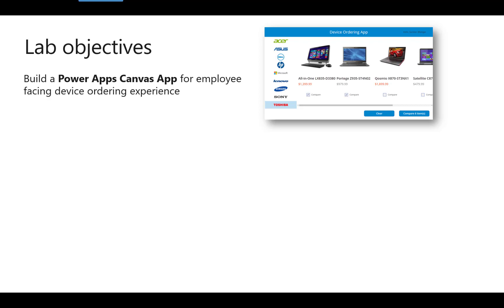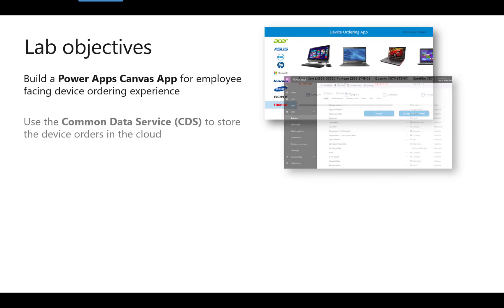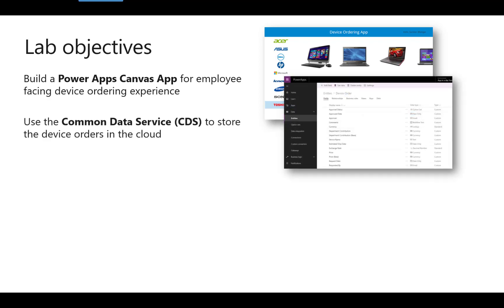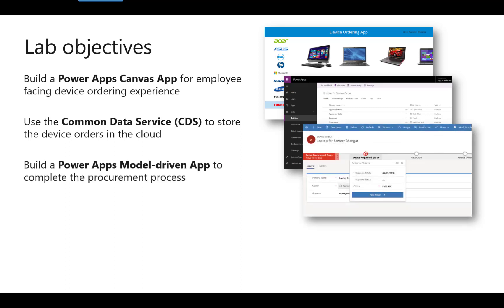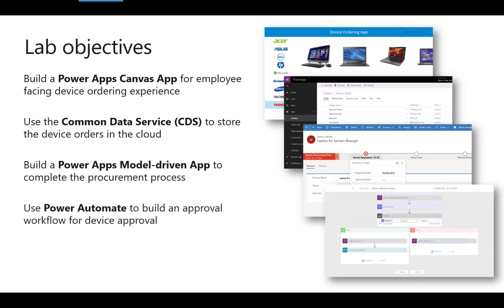In the four labs we will build a canvas app, create the entities, fields, and business rules within our Common Data Service solution, build a model-driven app to finalize the procurement process, and finally build an approval process using Power Automate Flow.